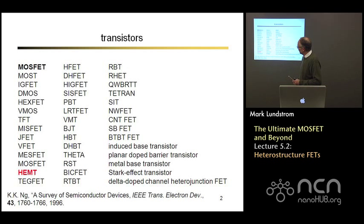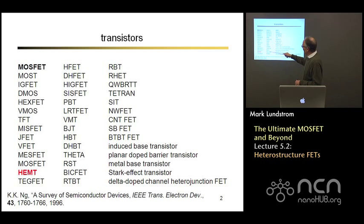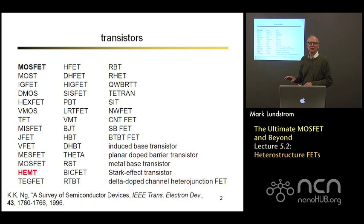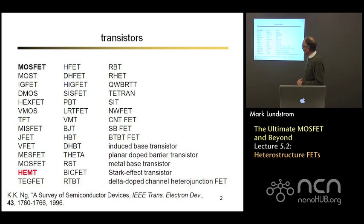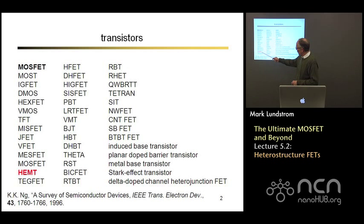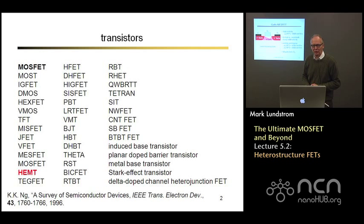We've been talking about the silicon MOSFET, also called IGFET — insulated gate field effect transistor. You can see that there are many different kinds of transistors; this is just a partial list. They don't all work by manipulating energy barriers, but most of them do, especially the ones that operate well. Some are being considered as possible replacements for silicon when we hit the scaling limits. But I just want to talk about one in particular called a HEMT.